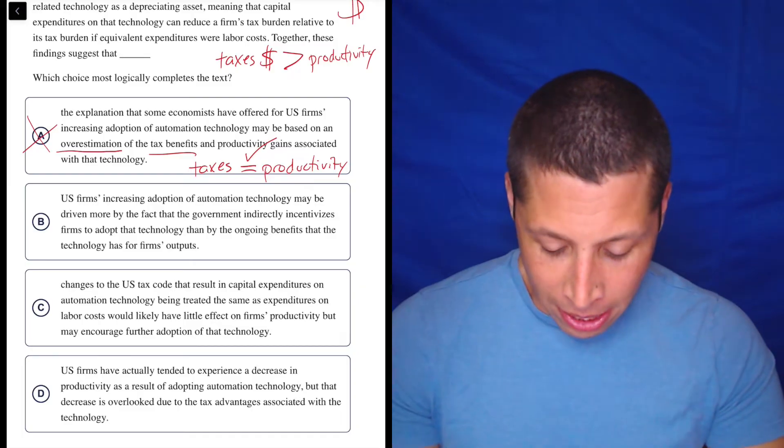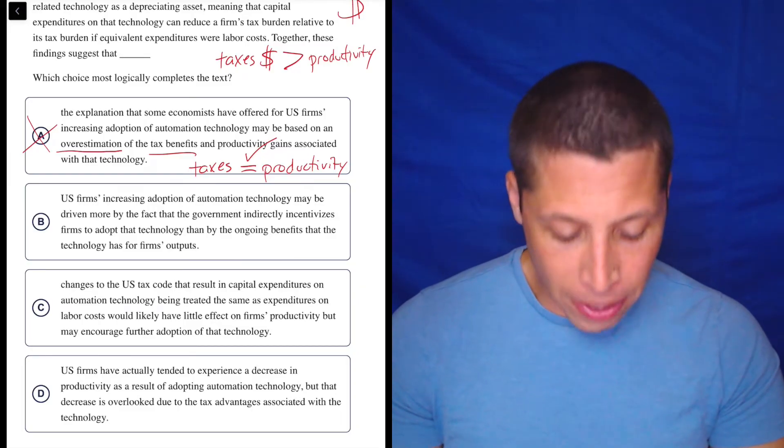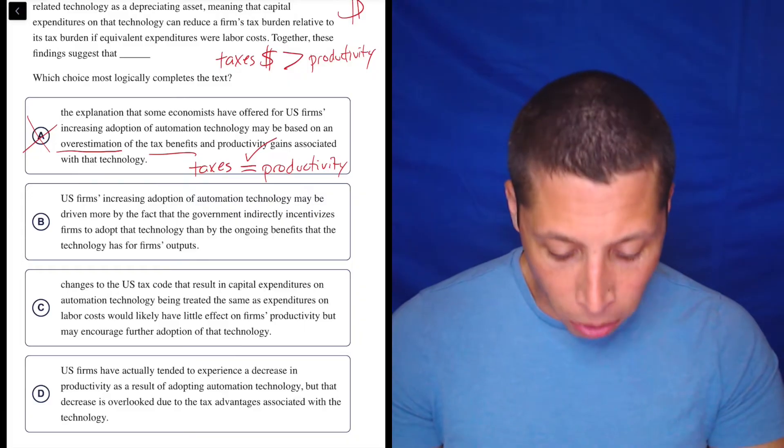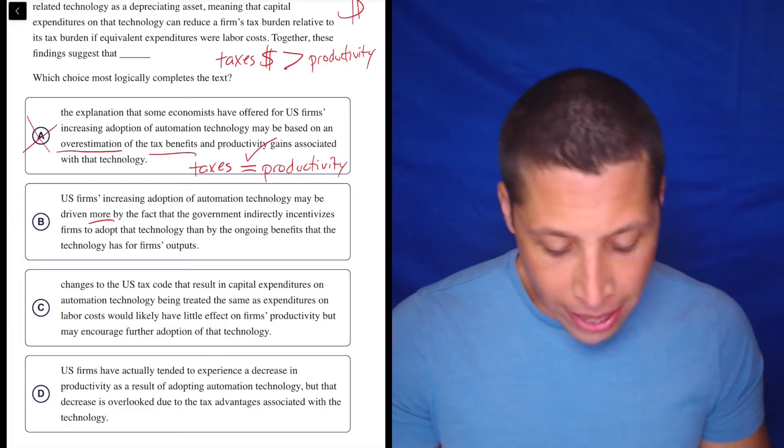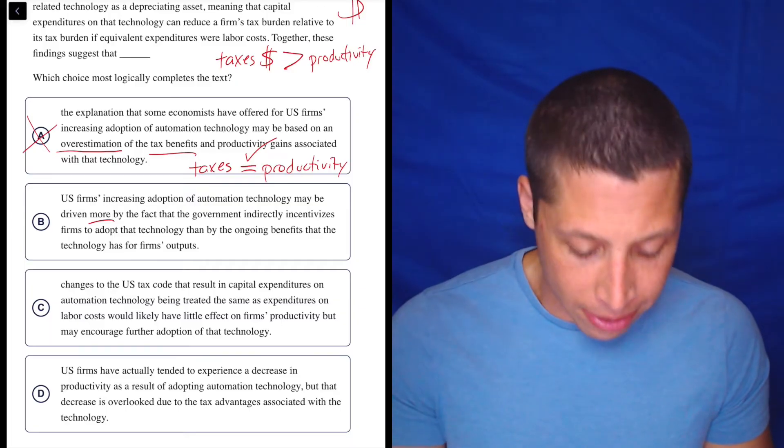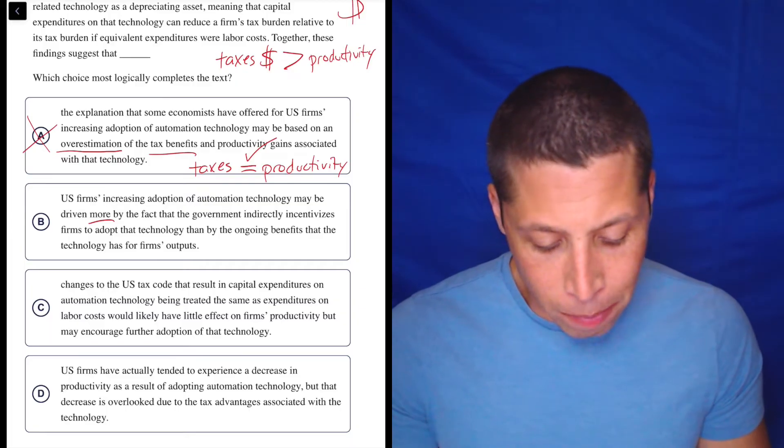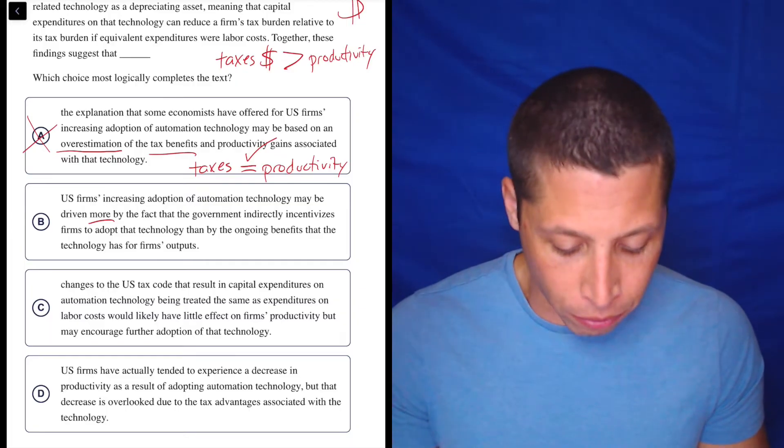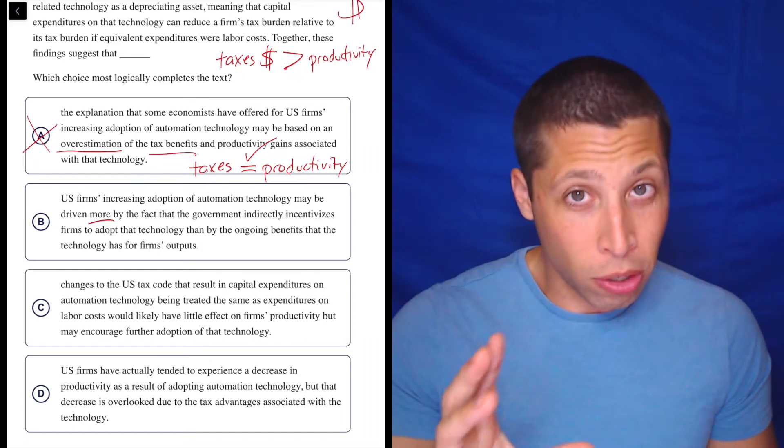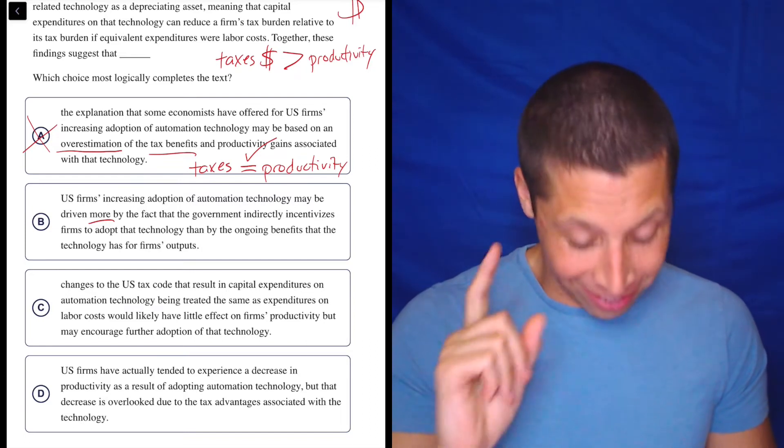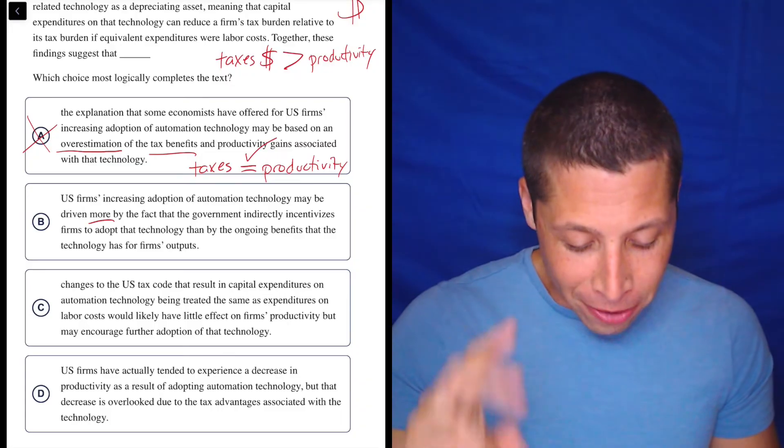Let's see. B, U.S. firms' increasing adoption of automation technology may be driven more by the fact, so more, by the fact that the government indirectly incentivizes firms to adopt that technology than by the ongoing benefits that the technology has for firms' outputs.